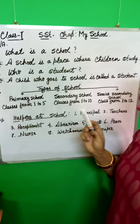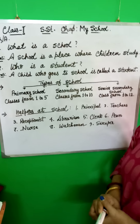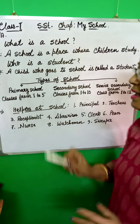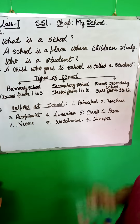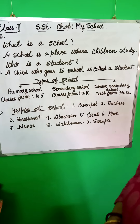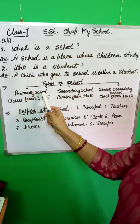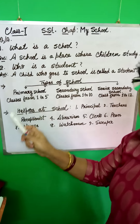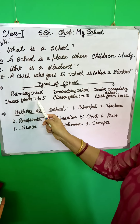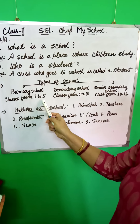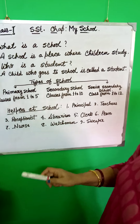We should know how many types of schools there are. There are basically three types of school. See this — primary school: the school which has classes from 1 to 5 is called a primary school.